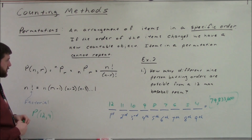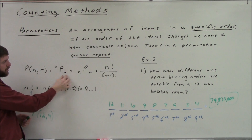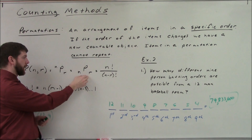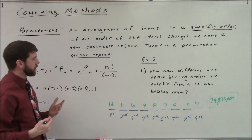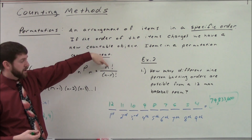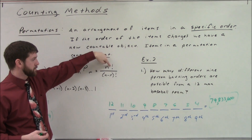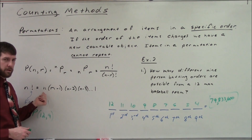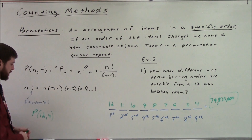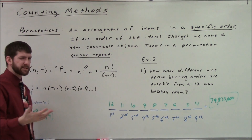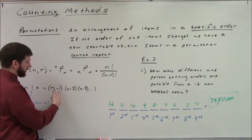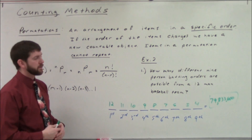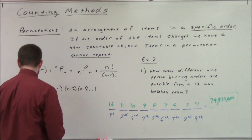Some notation: we write it as nPr, with n as a superscript and r as a subscript, or both as subscripts. The formula is n factorial over (n minus r) factorial. The exclamation point means factorial — start at that number and multiply down to one. So five factorial is 5 × 4 × 3 × 2 × 1.